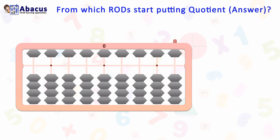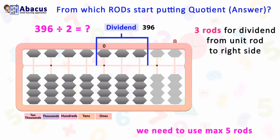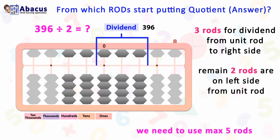Check with the example 396 divided by 2. We need to use a maximum of five rods. The dividend is 396, so three rods for the dividend from the unit rod to the right side — we also count the unit rod for the dividend. The remaining two rods are on the left side from the unit rod. These five rods we have to use in this division.